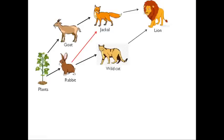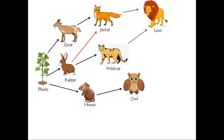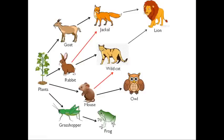Let's take more food chains of this ecosystem. Food chain three: mouse feeds on green plants, and owl feeds on mouse. Wild cat can also feed on mouse, so there is a connection between food chain two and food chain three through wild cat — it feeds on rabbits from food chain two and on mouse from food chain three. Food chain four: grasshoppers feed on plants, frogs feed on grasshoppers, and snakes feed on frogs. Snakes can also feed on mouse, making one more connection between food chain three and four.